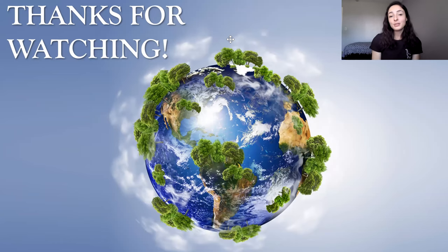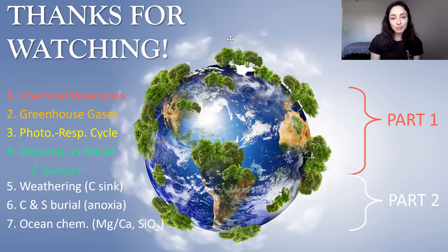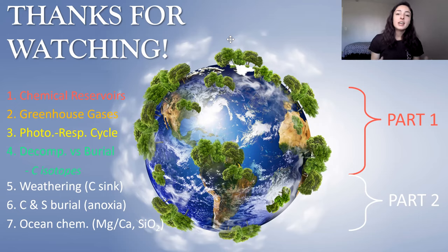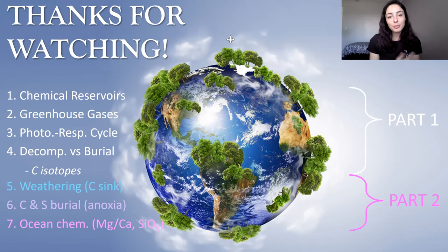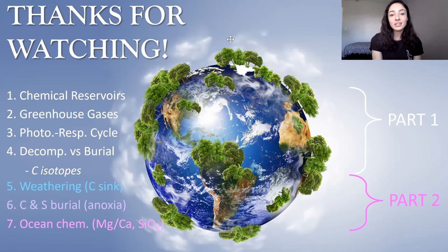So I hope this video was helpful and you learned a little bit about the major biogeochemical cycles, how these chemicals move between chemical reservoirs, greenhouse gases and how they can cause the greenhouse effect, photosynthesis and respiration and how they balance each other out and can cause carbon burial events, how organic matter can also be decomposed and re-oxidized, and how we can track these different burial and oxidation events throughout Earth's history using carbon isotopes — as well as using carbon isotopes to study climate change, early life on Earth, or even life on other planets. I hope you're excited to learn next time about weathering as a carbon sink, carbon and sulfur burial, and anoxia, and ocean chemistry. Thanks for watching and I'll see you guys next time!